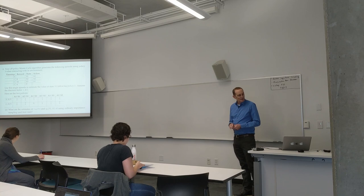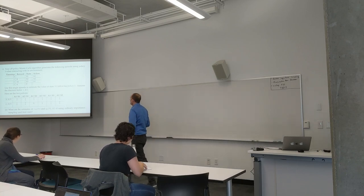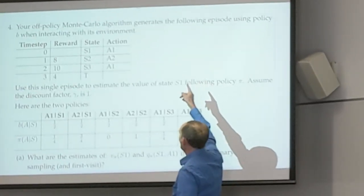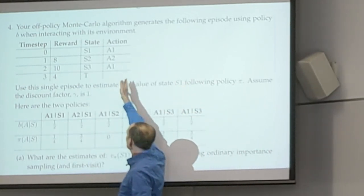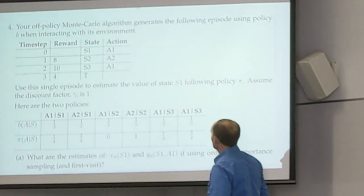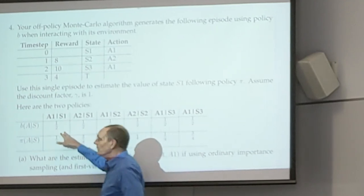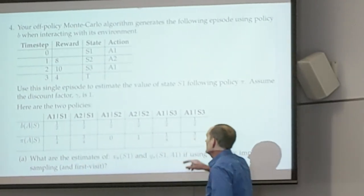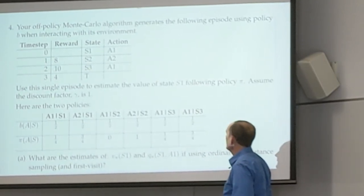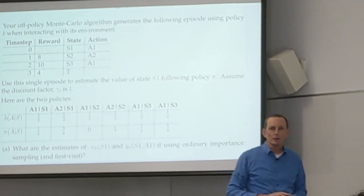That was going ahead and using importance sampling. We had a behavior policy that went ahead and did these actions at these time steps, so we had that particular episode, and these were the particular statistical probabilities. We had the policy that we were trying to evaluate. The discount factor was one, to try and make life easy.